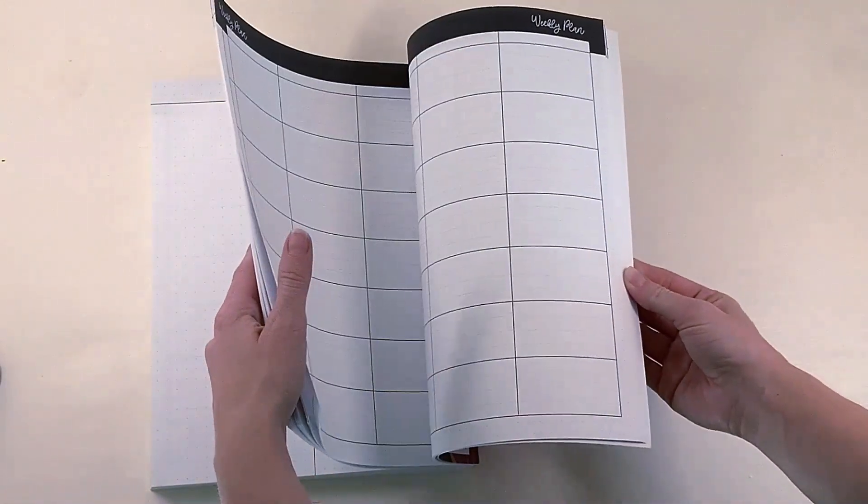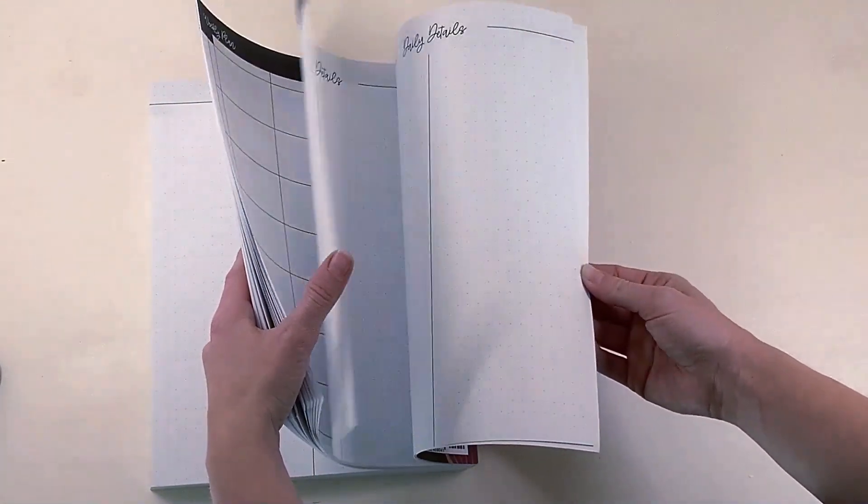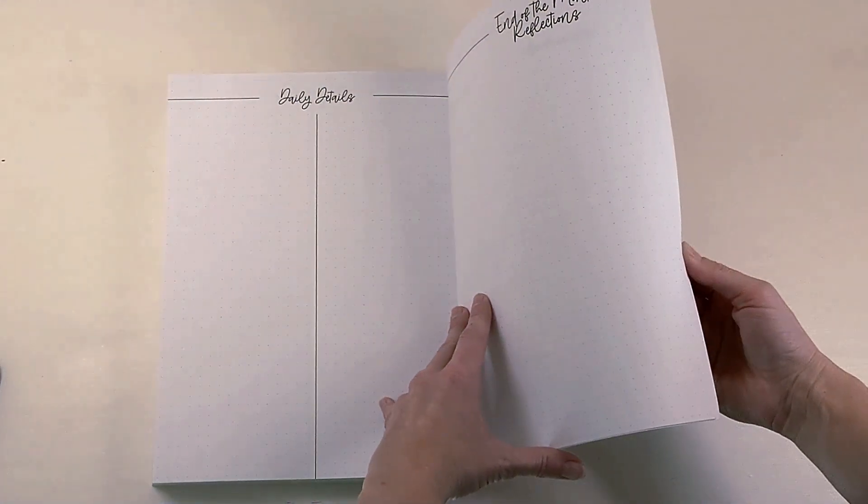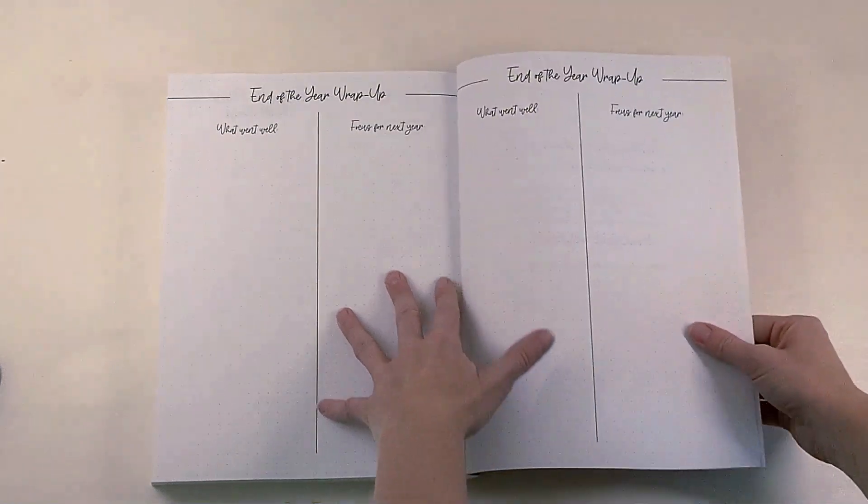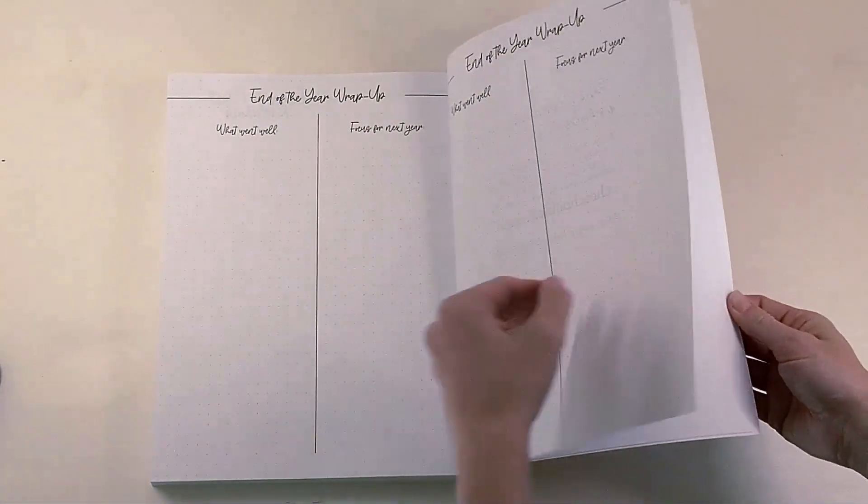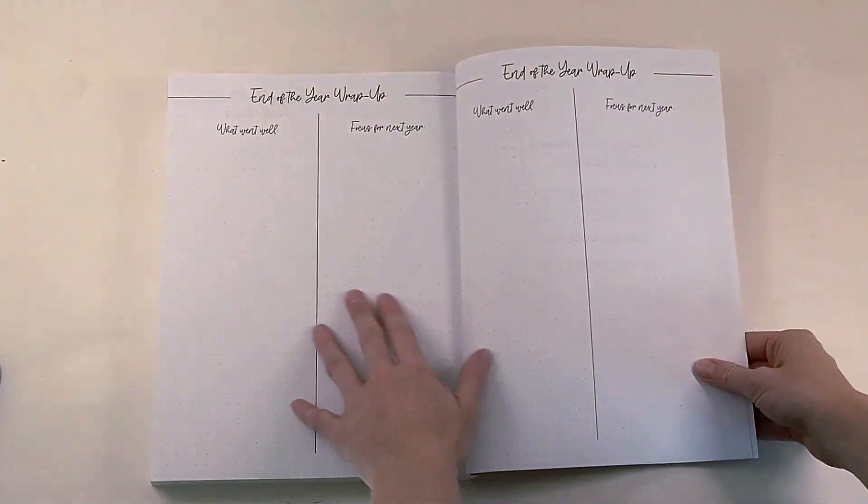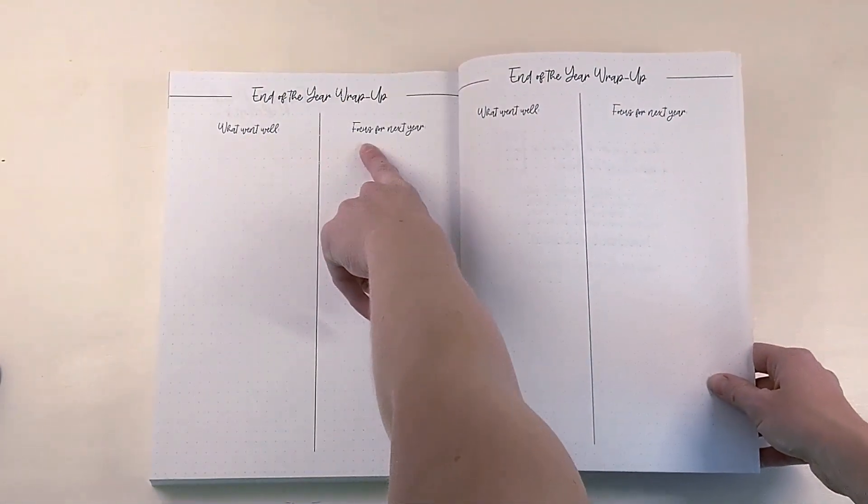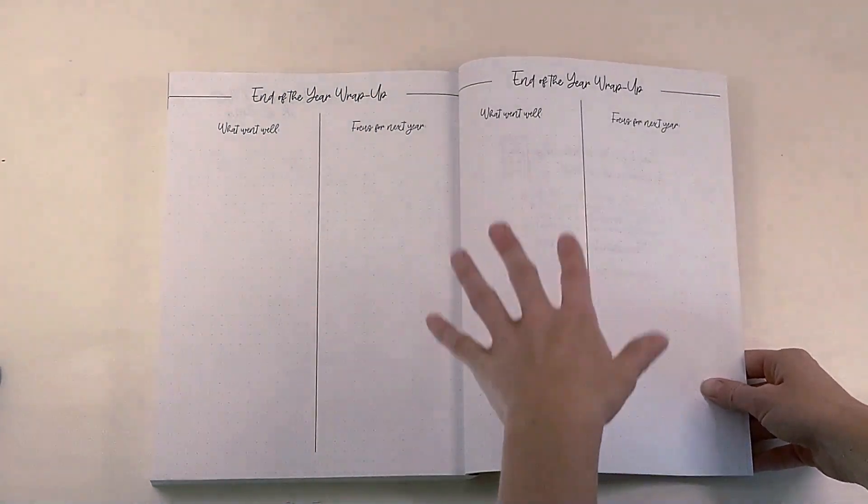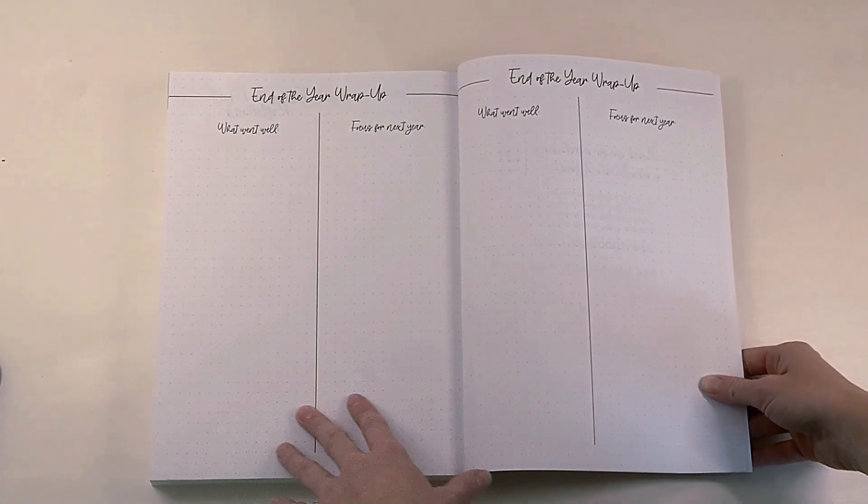So we have end of month reflections. The end of year wrap up. And there is two pages for this. And this says what went well and focus for next year. So you have two pages to write everything you need to reflect on the year, which is really cool.